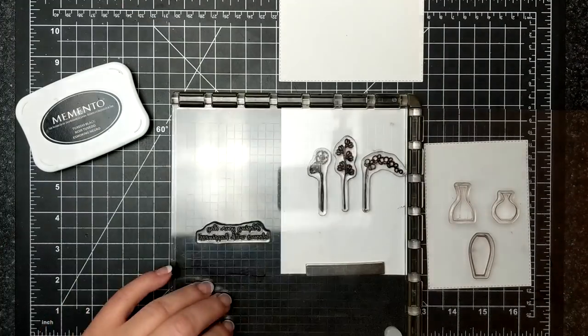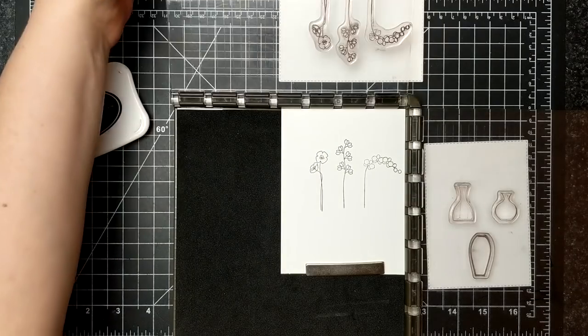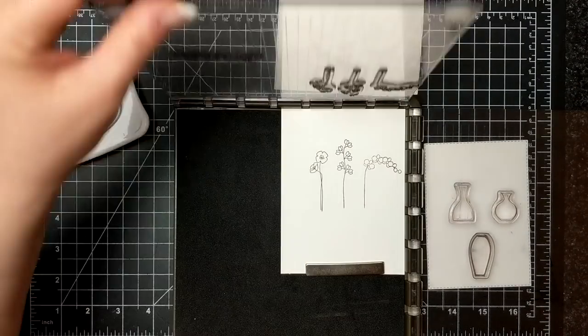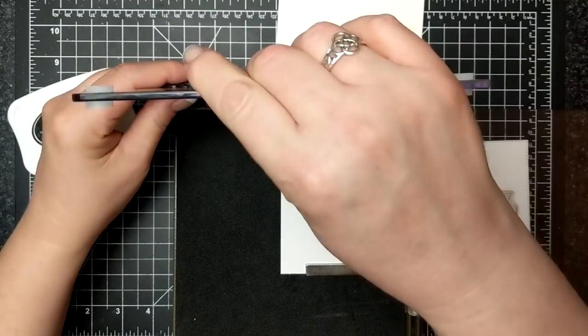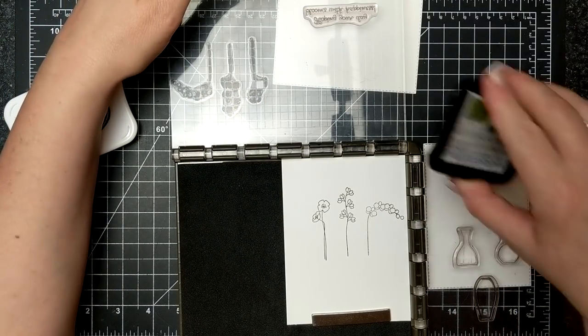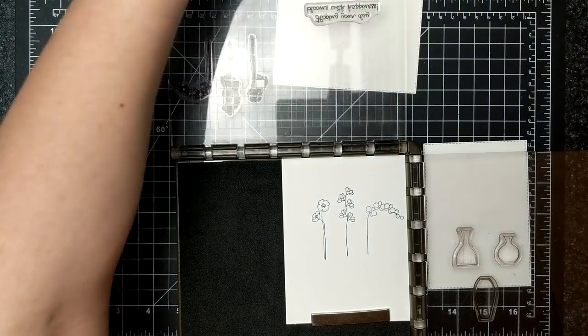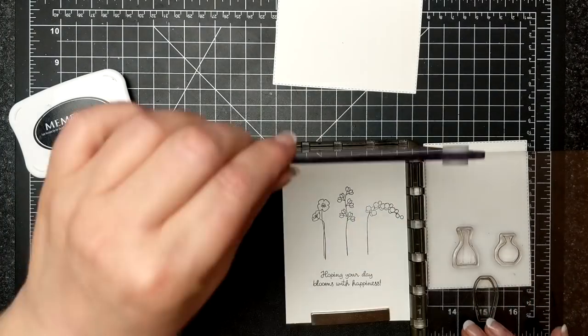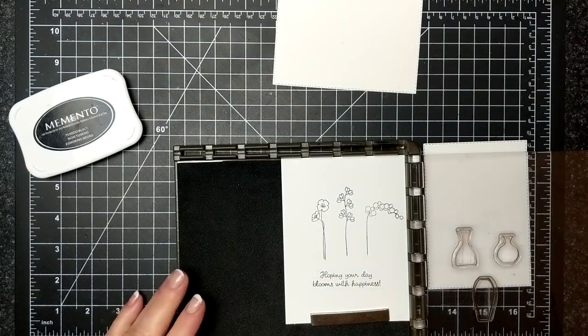So I have inked up my three flowers with Memento Tuxedo Black ink because I plan on coloring them with blends. I have the sentiment also on the back side of the Stamparatus door which I swung around.